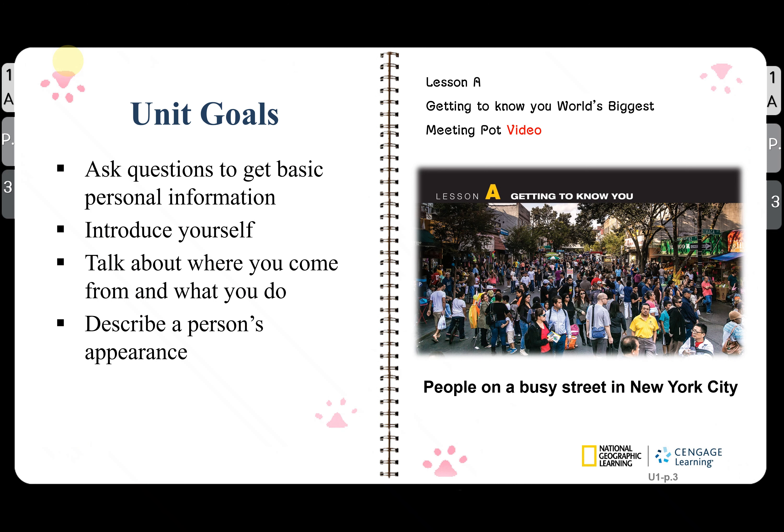On part B, you have to describe a person's appearance and describe yourself too. Look at the picture — there are people on a busy street in New York City. I will let you look at the video to know more about people from different places.